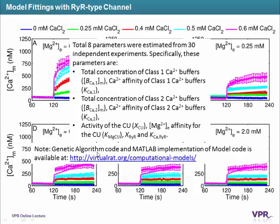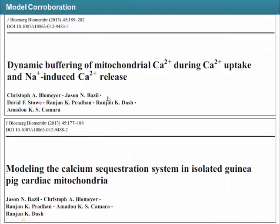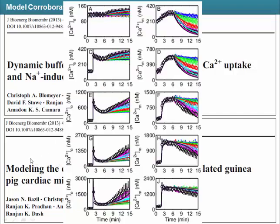We used a genetic algorithm for parameter optimization, and the model was implemented in MATLAB — all codes are available on the Virtual Rat website. Parameter estimation was done using the experiments by Aha, and we corroborated and validated the model using a different set of experiments done in the absence of magnesium. This dataset was modeled by the base model that formed the basis of our model. Note that the base model did not account for the ryanodine receptor that we added. As you can see, the model we developed is also able to simulate the Blumenfeld data set, which validates the hypothesis that there are two different uptake modes in the mitochondria.